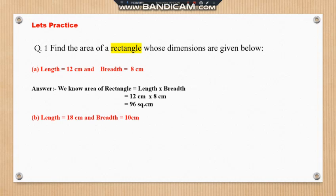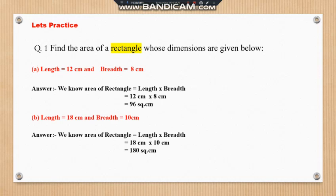Next question: length is 18 cm and breadth is 10 cm. 18 tens are 180. Therefore, the area of this rectangle is 180 square centimetres. When dimensions are given in centimetres, the unit of the answer is square centimetres. But sometimes dimensions are given in metres, and then the unit is square metres.